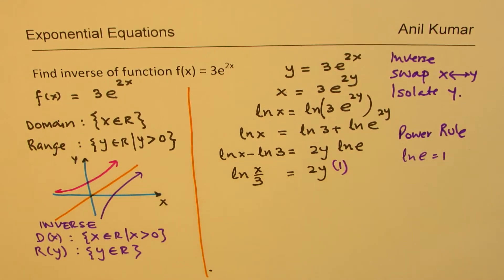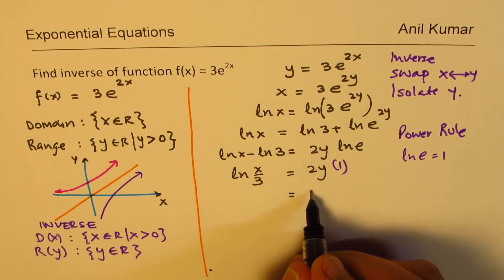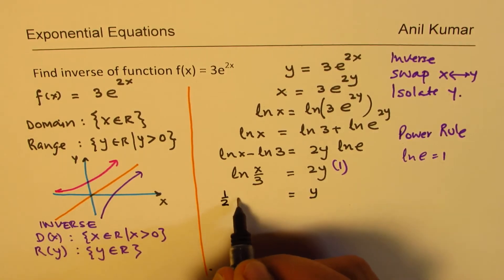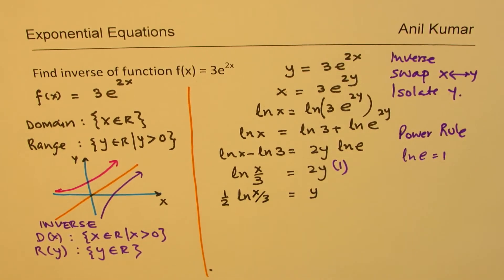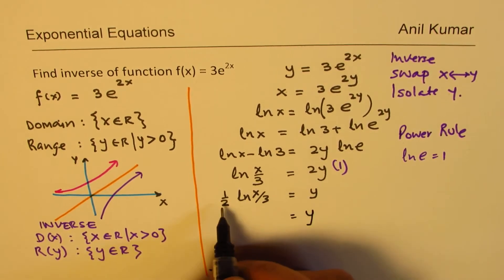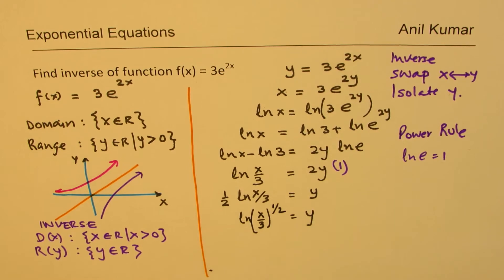So, it is kind of multiplied by 1. So, from here, we can isolate y as half of ln(x/3). Well, half of ln(x/3) to the power of 1. That becomes y.